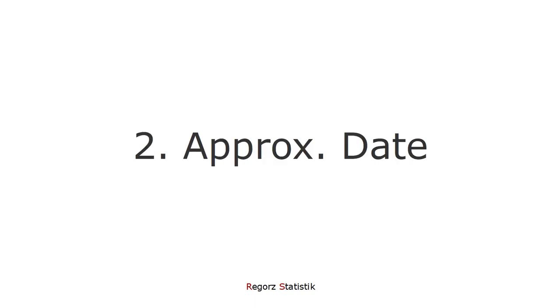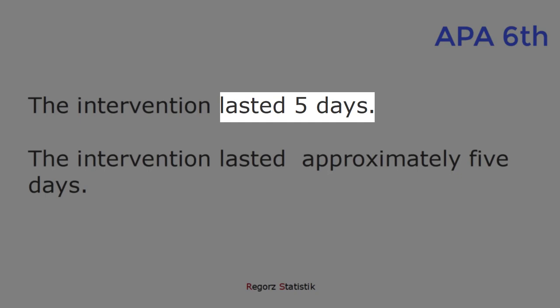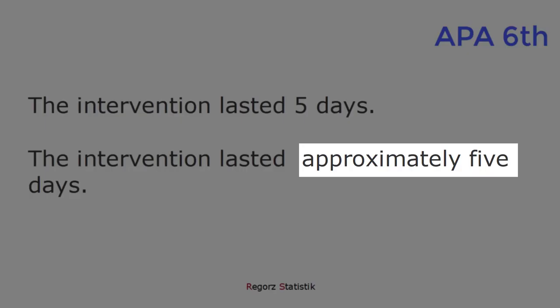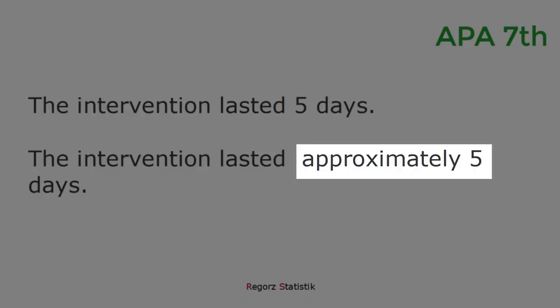Next, we'll be looking at imprecise dates, days, months, and years. If they are exact measures, they're written in APA 6 as numerals. But if they were not precise dates but just approximations, you had to write them as words. In APA 7, in both cases, you use the numeral.